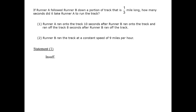Next, we look at statement 2 alone. It gives us runner B's speed, which allows us to calculate runner B's time based on the length of the track. But we want the time for runner A. When we look at statement 2 alone, we have no information about how to relate this knowledge about runner B to runner A. So statement 2 is insufficient.